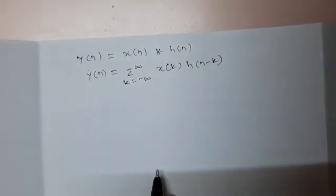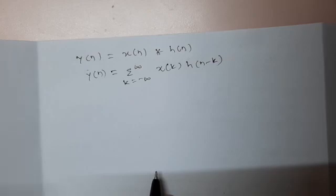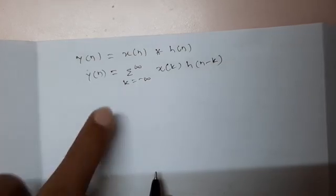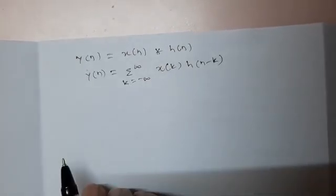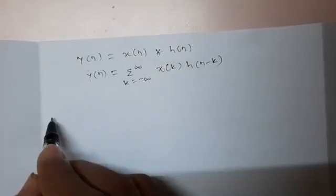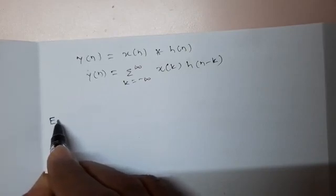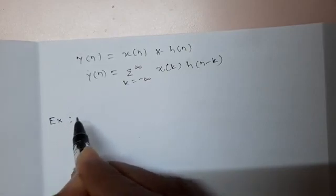So, given x(n) and h(n), you can find the response of the system. x(n) is the input and h(n) describes the behavior of the LTI system. So h(n) convolved with x(n) produces y(n), which you can find through this equation. Next, we will go through some examples of finding the convolution sum.